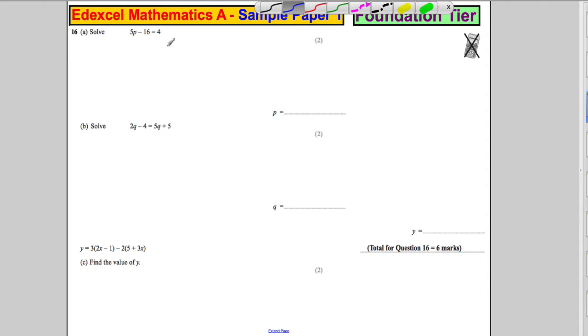I'm going to use the balance method. First thing I'm going to do, I'm going to try and get P by itself, so I'm going to add 16 to both sides to remove this subtract 16. And I get that 5P is therefore equal to 20.